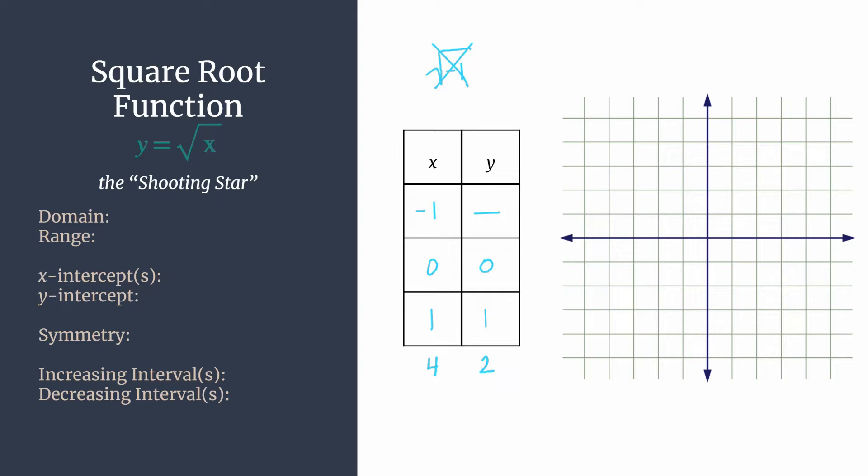All right, so those are our three points that we'll use. Let's go ahead and plot them. Zero, zero, one, one, and four, two. So our graph shoots out like this. It's the shooting star.